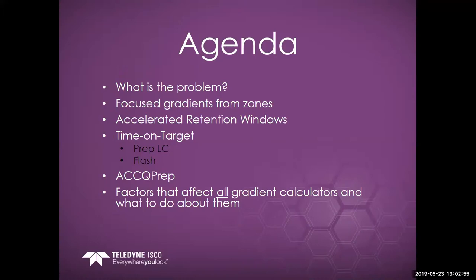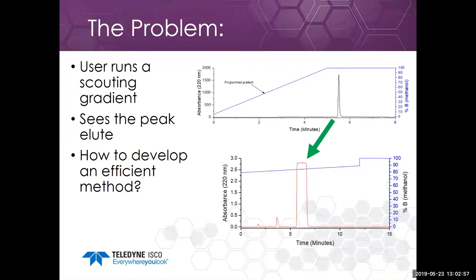So what is the problem? The problem is that the user runs a scouting gradient and they see their peak elute. They run a scouting gradient for a couple of different reasons: they want to see if their compound is pure, they want to see if they actually made their compound or if they only have starting material. And you should be able to develop a gradient from this method.